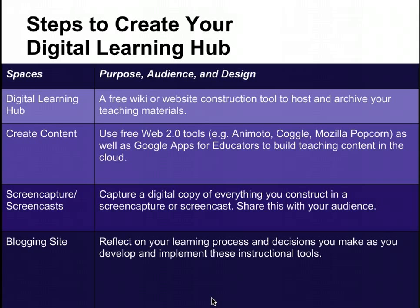Once you have your hub, start continuously creating content. I advise teachers to start with a unit and build content that goes along with it — for example, having students create a Mozilla Popcorn at the end of a unit, or start with a mind map in Coggle as a pre-learning activity. We start to think about what we've done across modules one, two, three, and four and how students gradually build up content. All of this content we want to embed in our digital learning hub — we don't want students traipsing across the internet looking for content we left them.